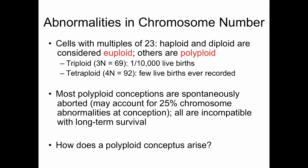Other cells that have multiples of 23 would be considered polyploid. A triploid individual is 3n, equal to 69 chromosomes. A tetraploid individual is 4n, equal to 92. It turns out that maybe 1 in 10,000 live births can be triploid. Only a few tetraploid live births have ever been recorded.